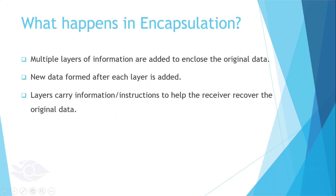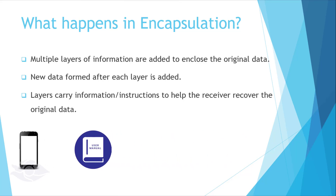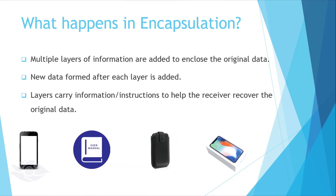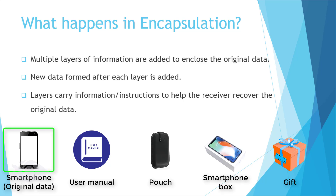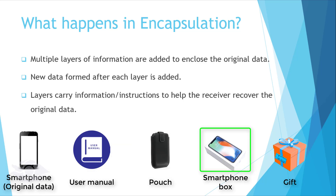In encapsulation, three things happen. First, multiple layers are added to enclose the original data, which is the phone in this example. Second, new data is formed each time a layer is added. And finally, each layer contains instructions on how to recover the original data at the receiving station. The step-by-step transformation of the smartphone to the gift box is called encapsulation.